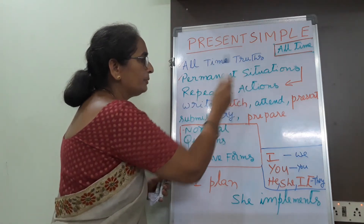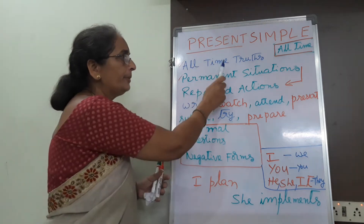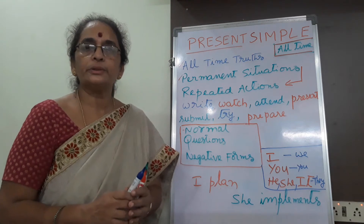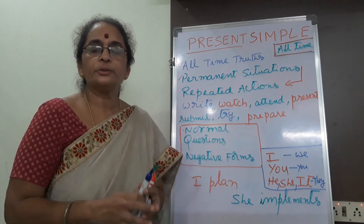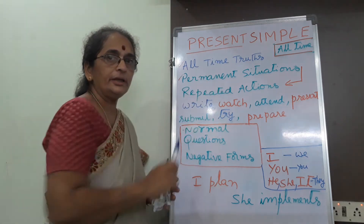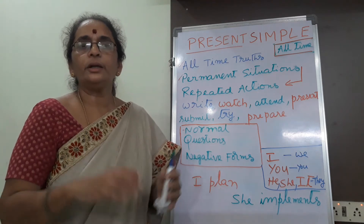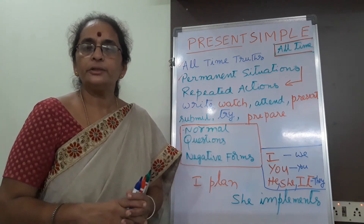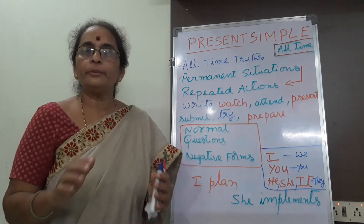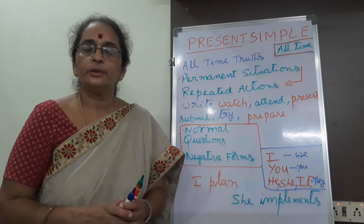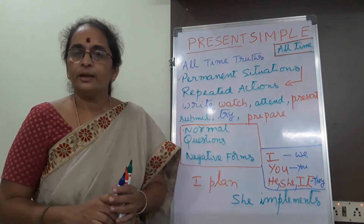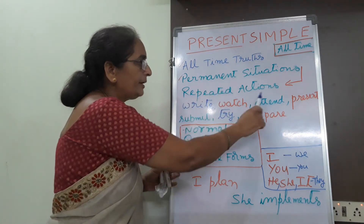In present simple tense, there are all-time truths — they happen permanently, universally. There won't be any change at all in universal truths. They are natural truths, they are permanent. Like sun rises in the east, sun sets in the west, water freezes at 0 degrees Celsius. Permanent situations and repeated actions: your grandmother sits in her room, grandparents take rest — they are all permanent situations and repeated actions too.